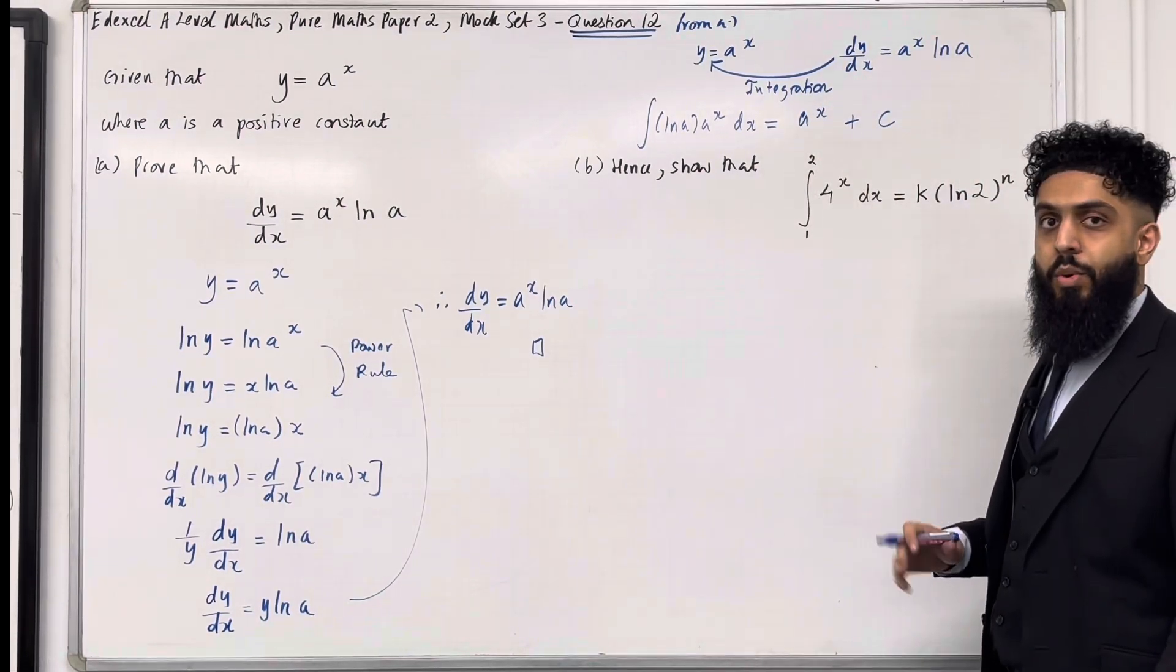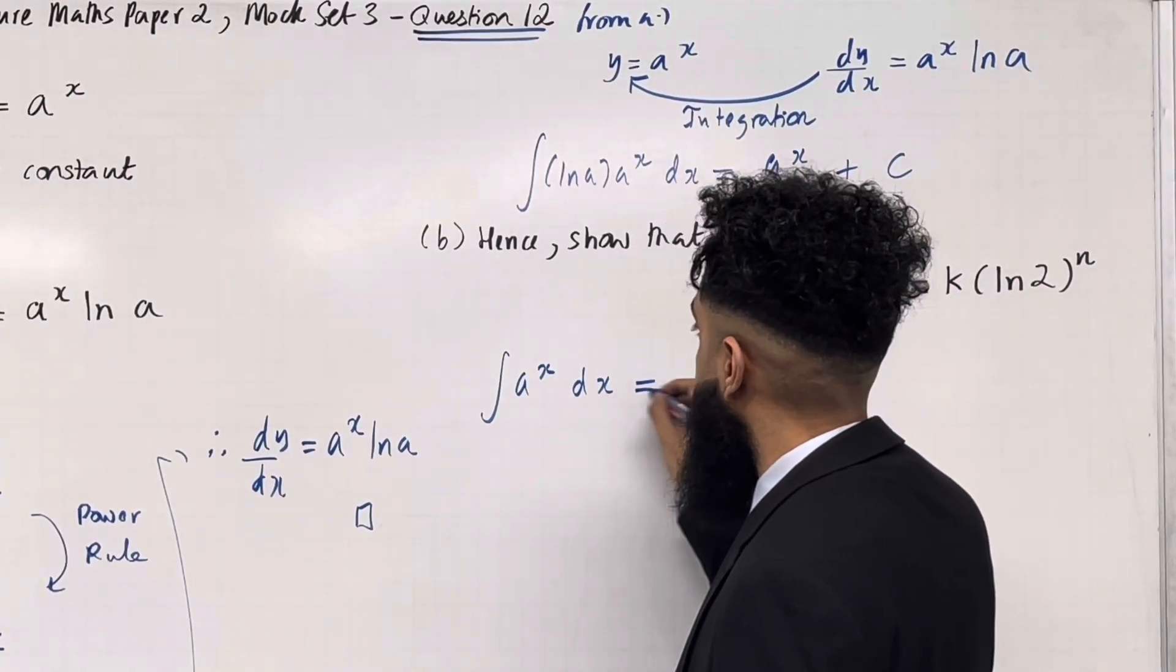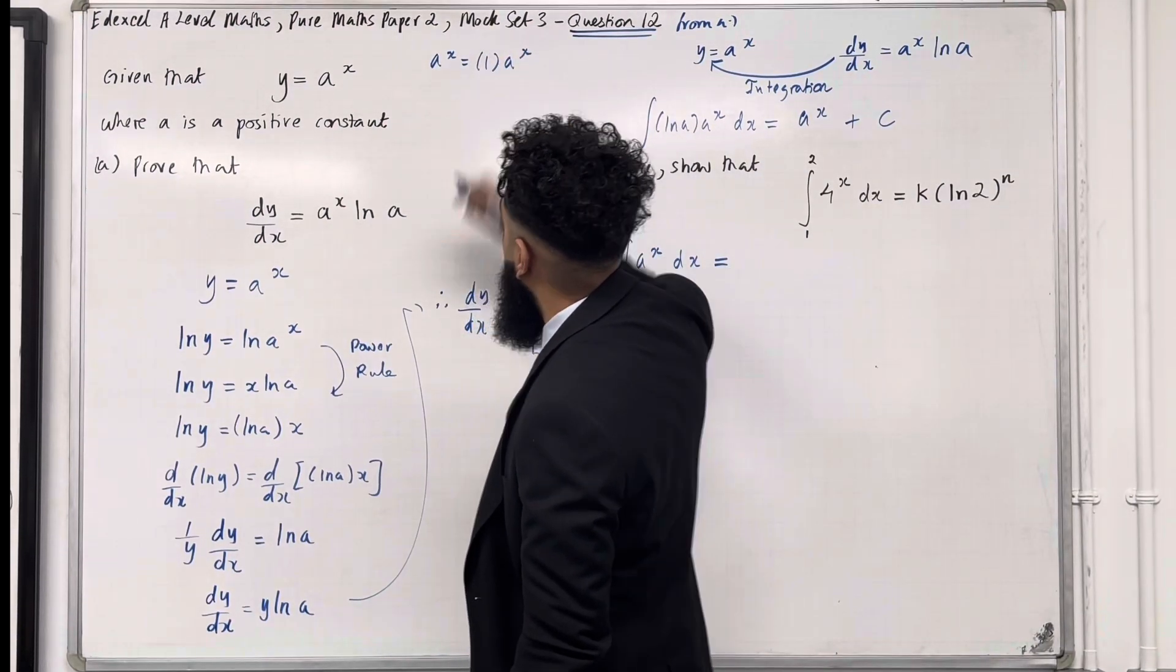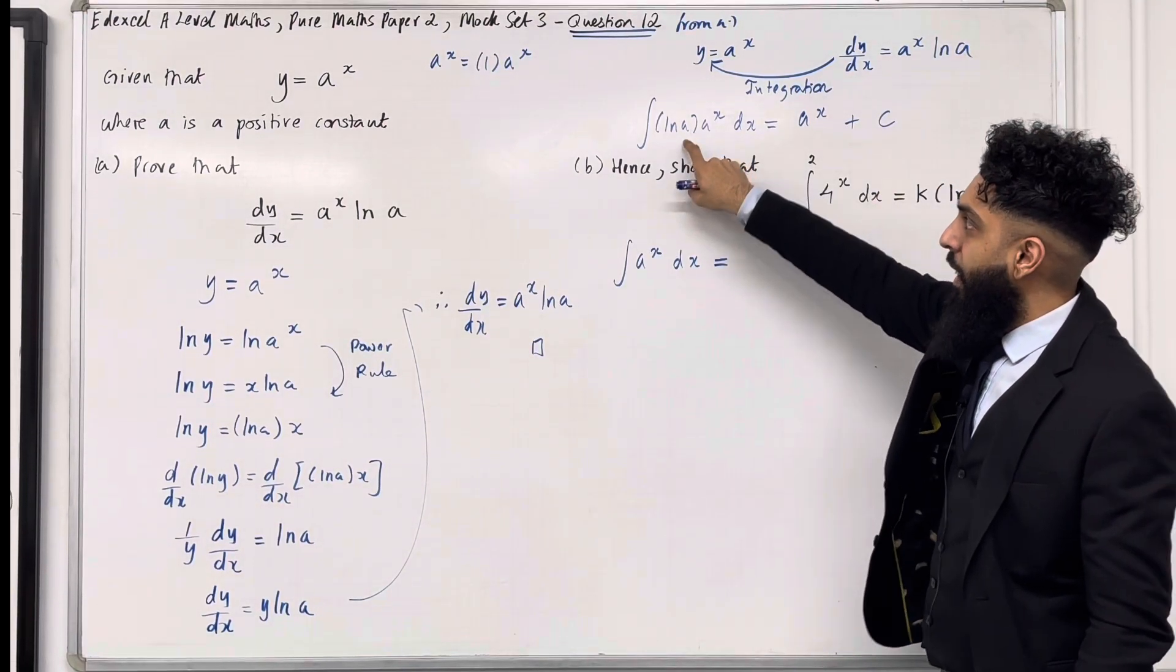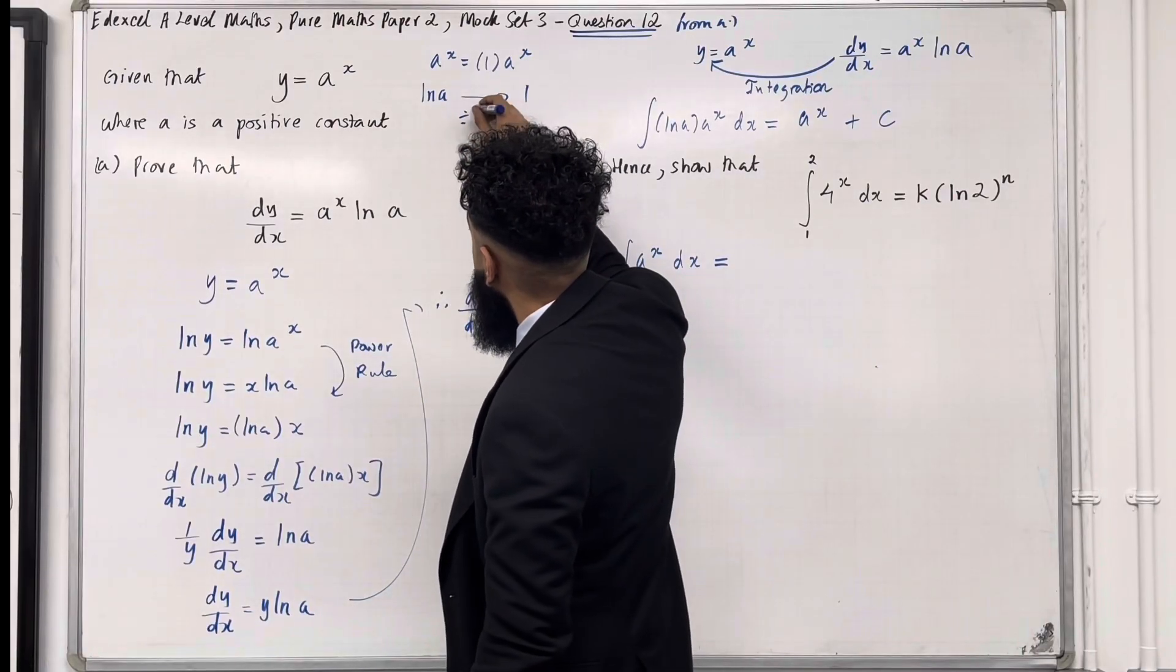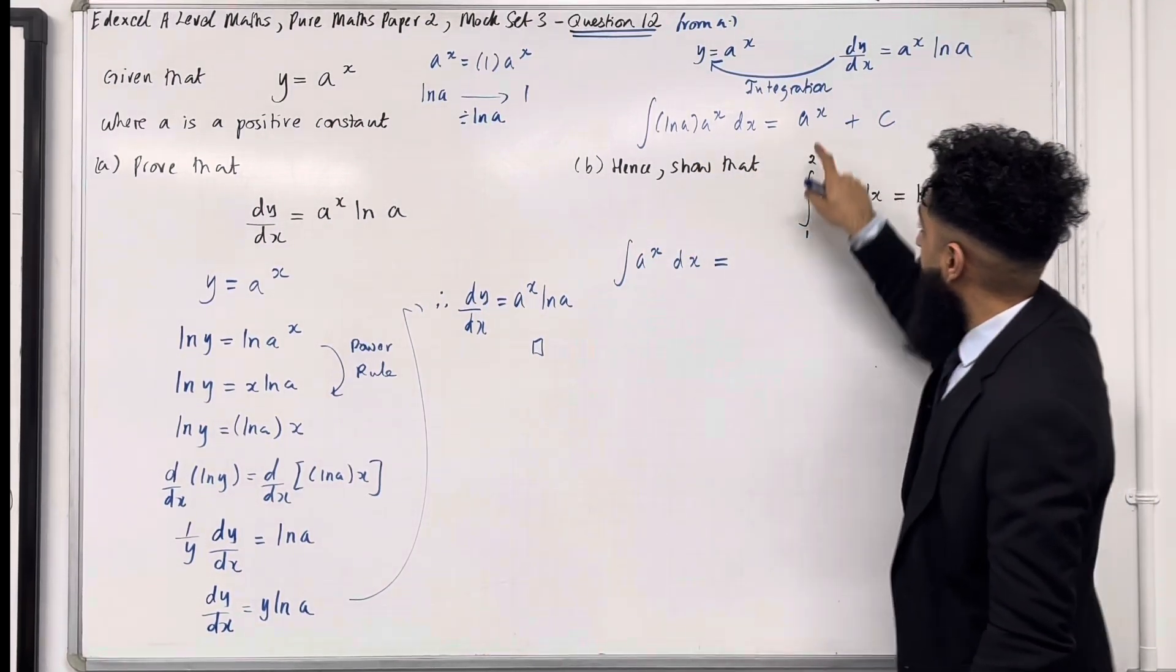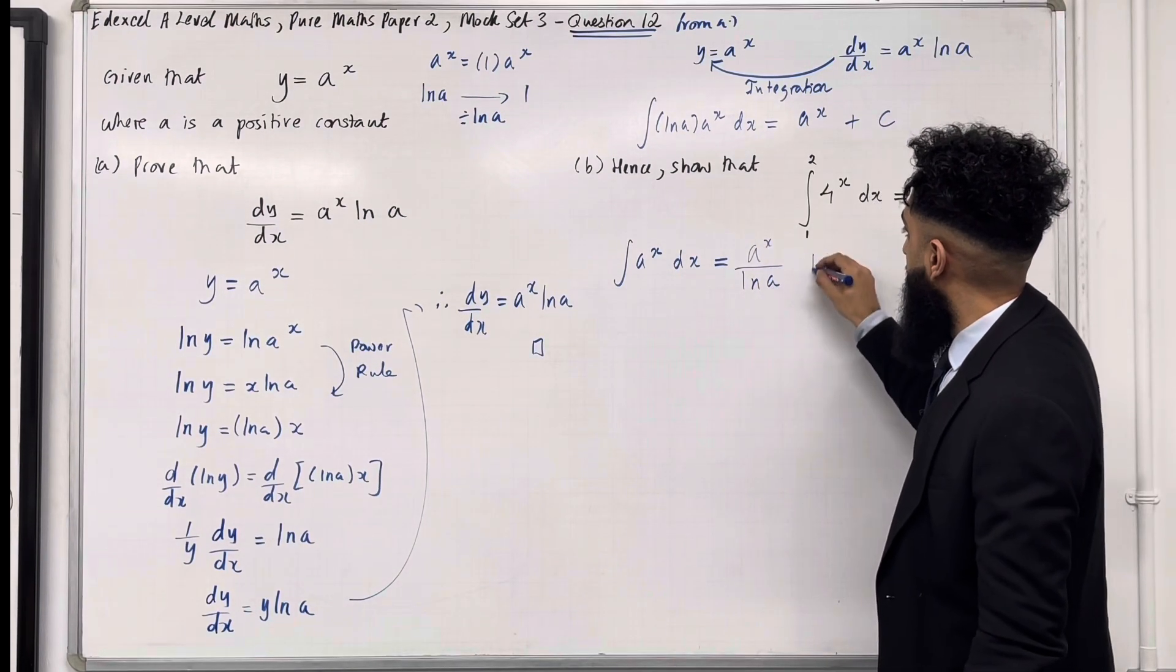Now I'm going to use this integral to formulate the integral of a to the power x with respect to x. Now a to the power x is the same as writing one times a to the power x. I want to adjust the constant, so I want to go from ln a to a 1. So going from ln a to a 1 requires me to divide by ln a. So if the integral of this is this, the integral of this has to be a to the power x divide by ln a plus c.